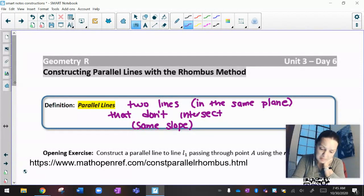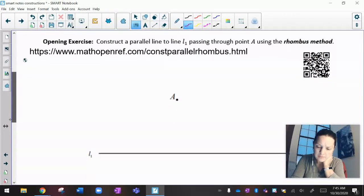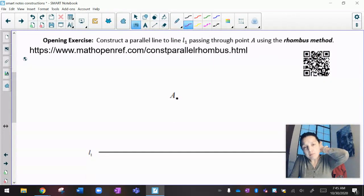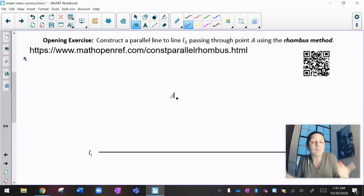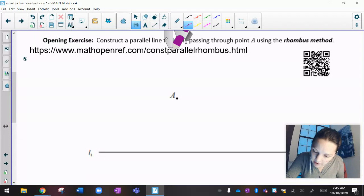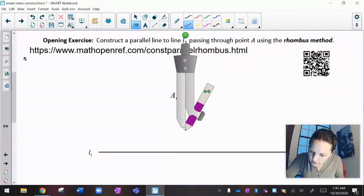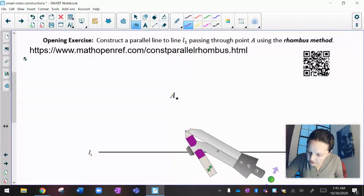Now, how do I make parallel lines? Well, we're going to do something called the rhombus method. The rhombus method really means I'm going to create a rhombus out of thin air. And if you're thinking, wait, what's a rhombus? A rhombus is a parallelogram where all the sides are equal. A rhombus will have four equal sides and opposite sides will automatically be parallel. Hence, that's why we're going to use it to draw a parallel line.